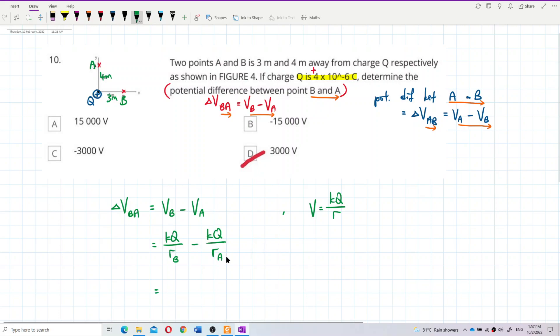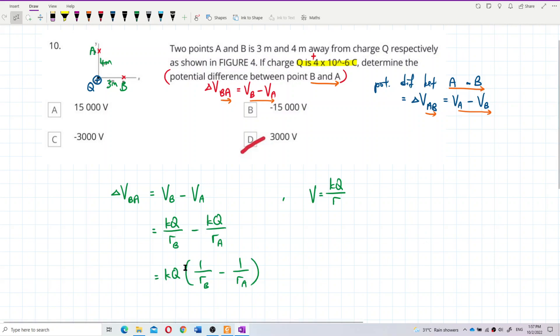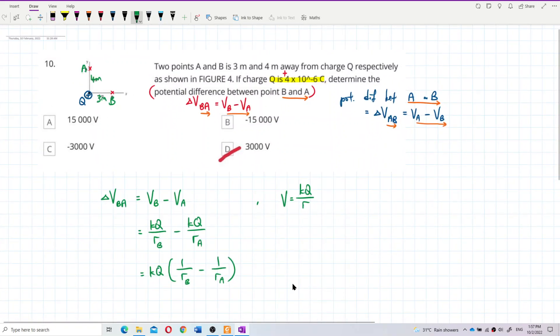Let's substitute the value. kQ can be factored out first because they are common. So I can substitute the value. k is 9×10^9, you can find this k value in the list of constants provided.